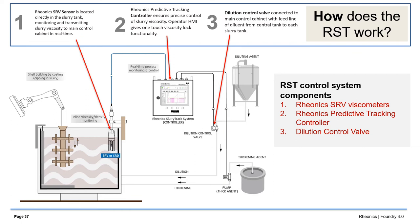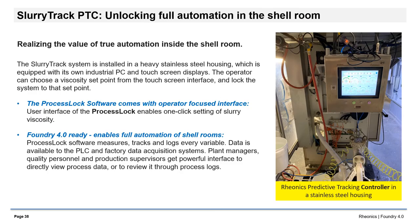Slurry Track can also be used for process viscosity control. In this case, Slurry Track's predictive tracking controller provides signals to open valves to dose diluents or other additives to the slurry drum. The intuitive operator interface allows one-click setting of slurry viscosity. Slurry Track's controller actuates a valve system that accurately doses diluent into the slurry tank as its viscosity rises due to evaporation. Its small, frequent dilutions reduce viscosity variations to an absolute minimum, with uniformity and accuracy unmatchable using either cups or rotational viscometers. Its three functional elements work together to provide a transparent, responsive and accurate viscosity control, requiring minimal intervention by the operator. The slurry track system is installed in a heavy stainless steel housing, equipped with its own industrial PC and touchscreen displays. The operator can choose a viscosity set point from the touchscreen interface and lock the system to that set point. Connect the sensor, mount the controller, wire up the valve, and it's ready to go.